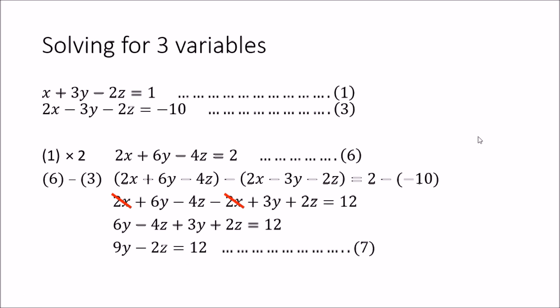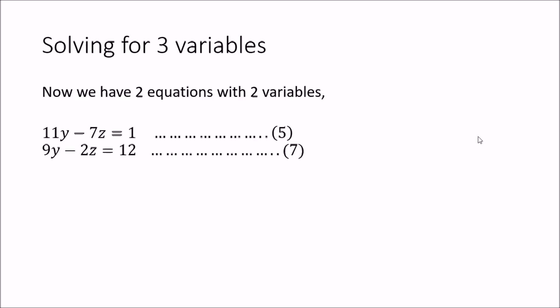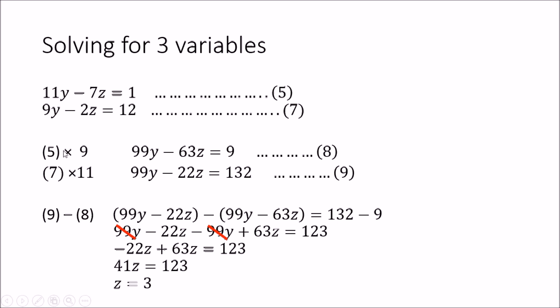We have now reduced the three original equations to two equations containing only y and z: equation 5 is 11y - 7z = 1, and equation 7 is 9y - 2z = 12. We solve these as before. Multiply equation 5 by 9 to get the coefficient of y as 99, and multiply equation 7 by 11 so that coefficient is also 99. Subtracting equation 8 from equation 9 gives 99y - 22z - (99y - 63z) = 132 - 9, which expands to 99y - 22z - 99y + 63z = 123.